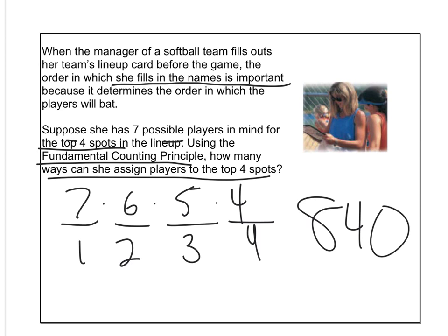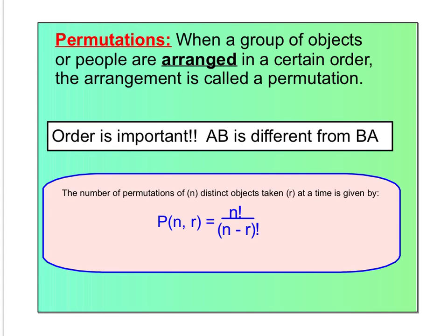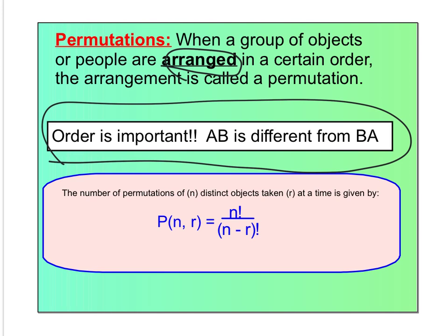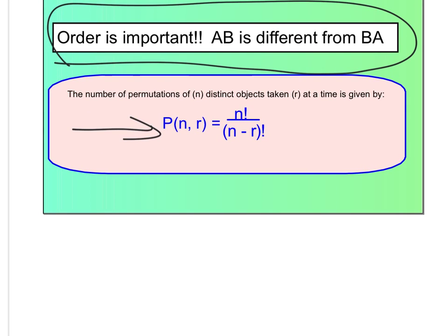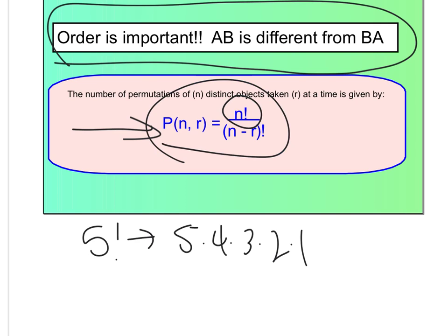And now what you realize is that since the order is important, we call that a permutation. Another way to think about it is an arrangement. Order is different. AB is different than BA. And kind of what we're looking at is this. So if you remember from part one, the exclamation point means you multiply from that number all the way down to one. So five factorial is five times four times three times two times one. N factorial over N minus R factorial is if I've got N things taken R at a time.